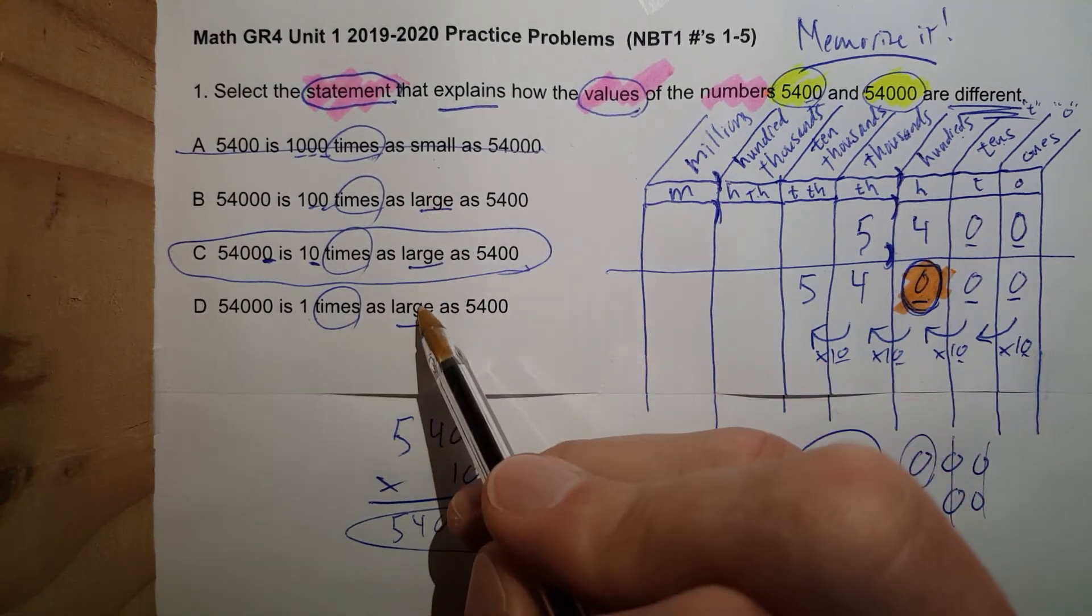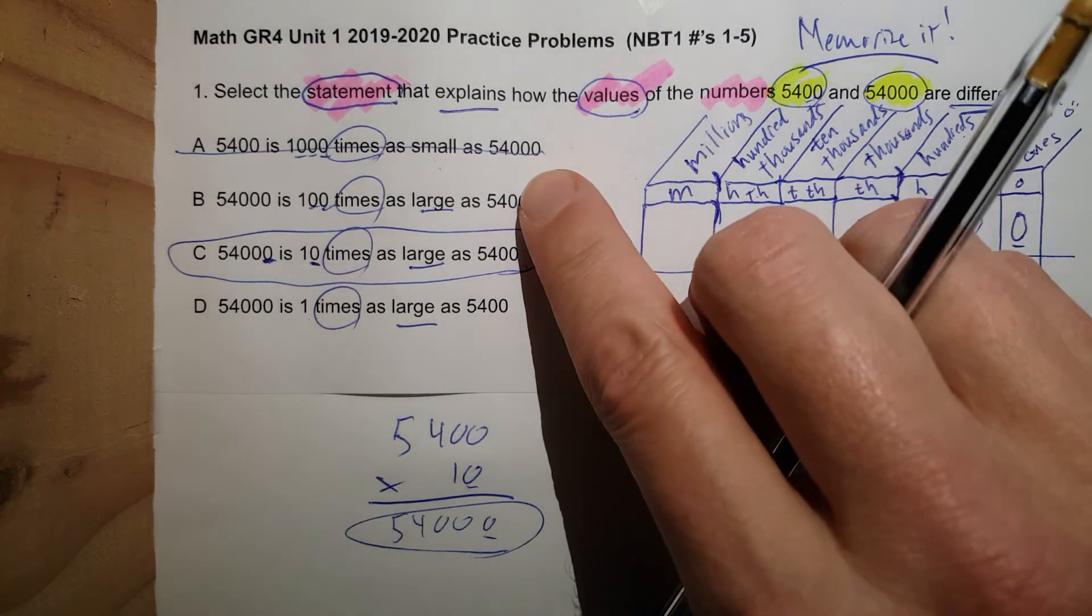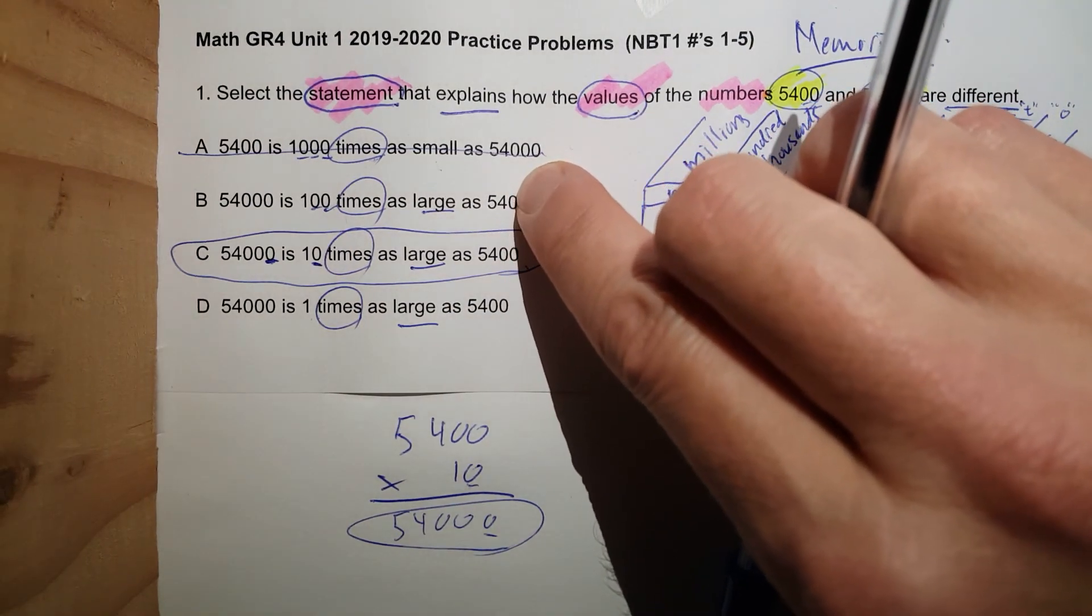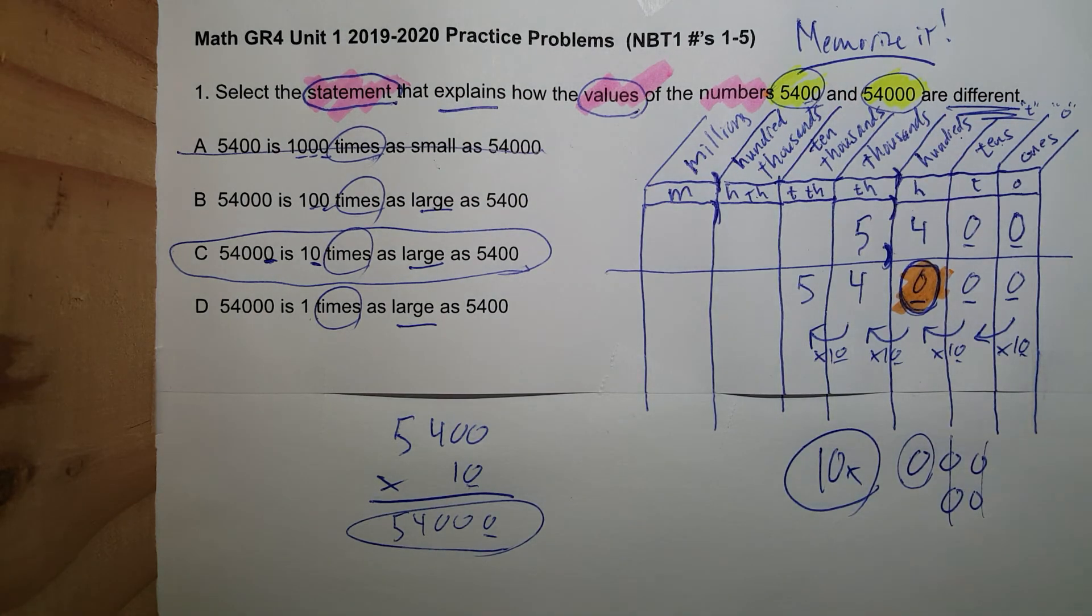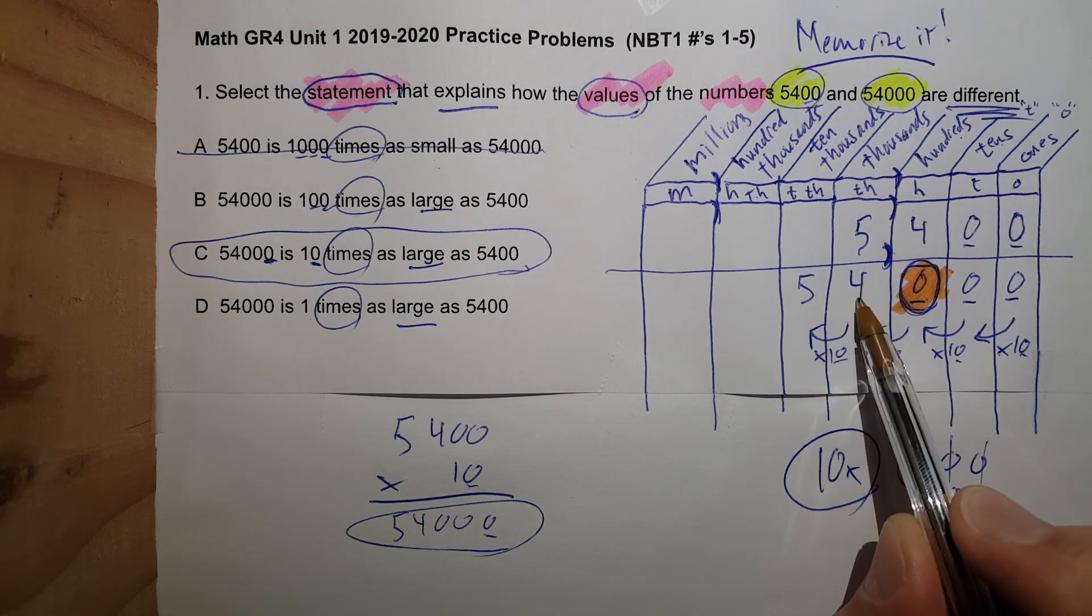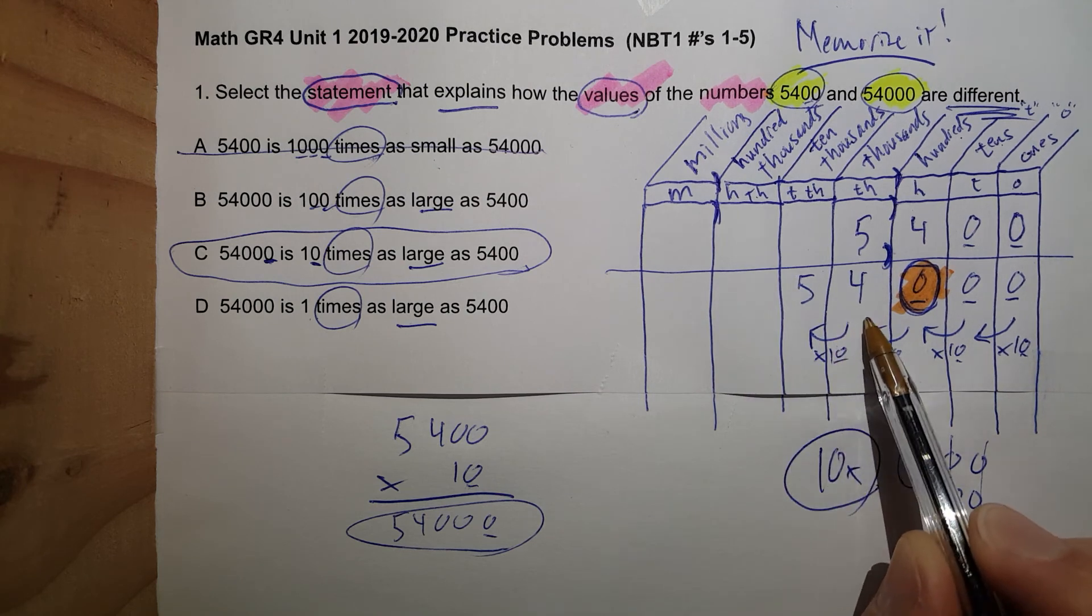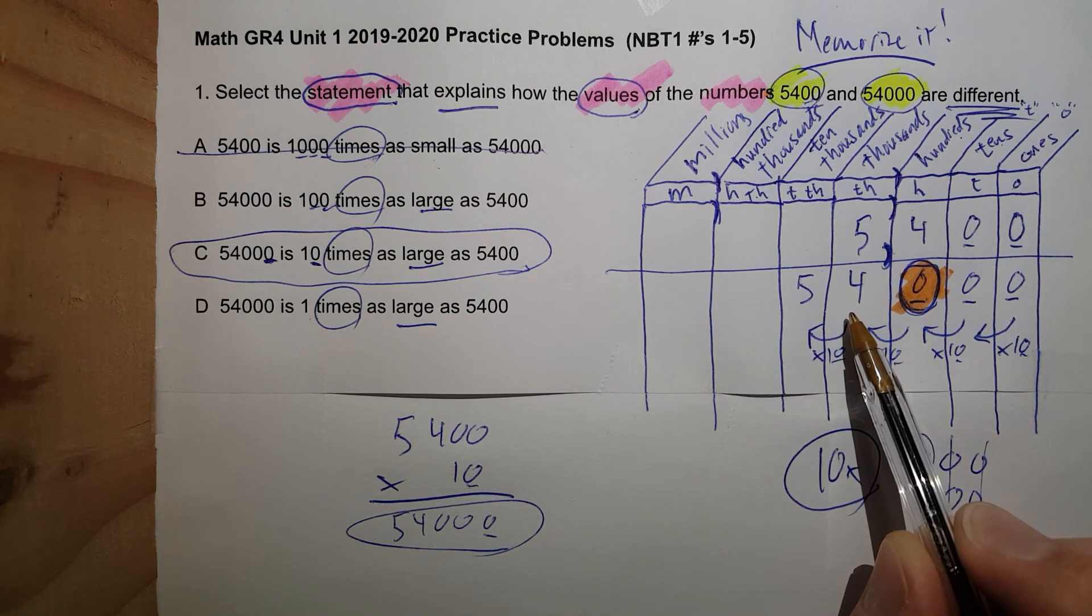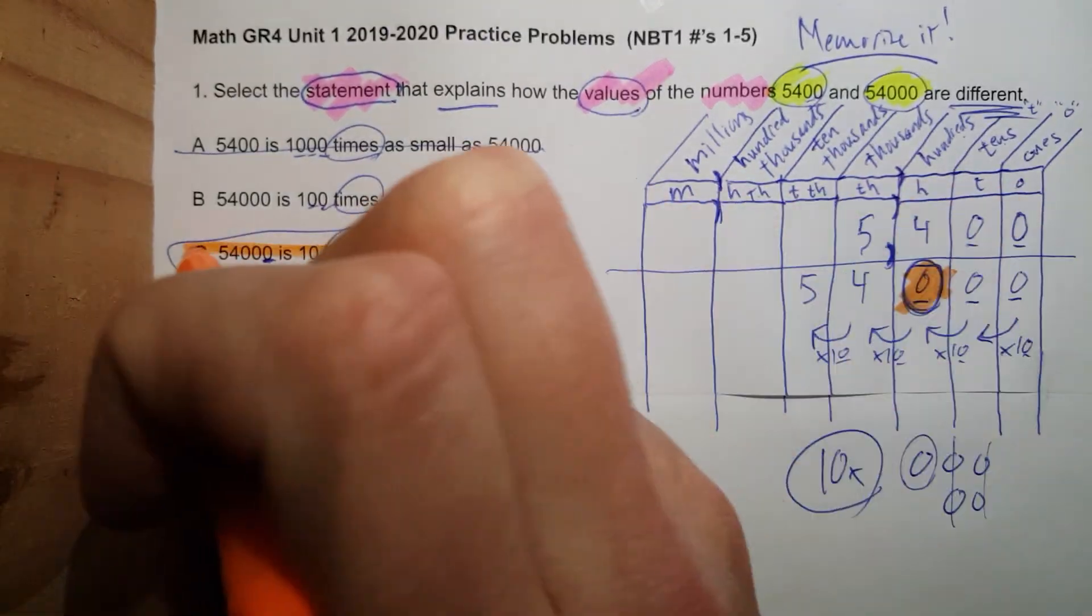Let's just focus on as large. If it was 100 times, we would need to take away one of those zeros, so it would be 540. Memorize the place value chart. And then, hopefully, right away, you clearly see it's just one place over, which means it's times 10. If it was two places over, it would be times 10 times 10, which is 100. These take a lot of practice. We will practice these a lot.